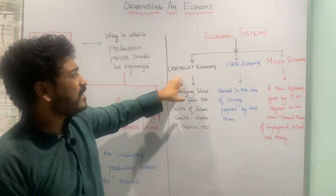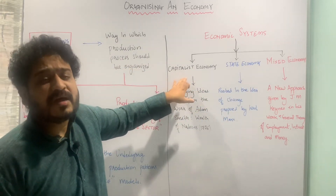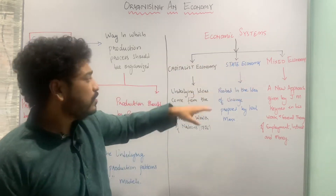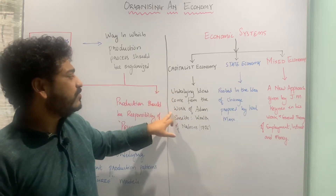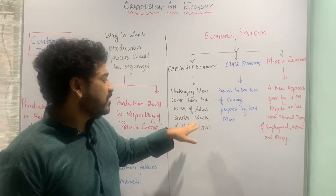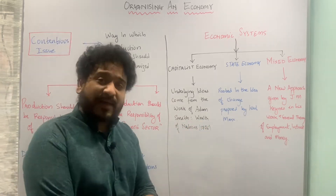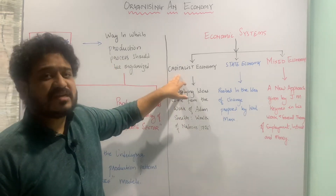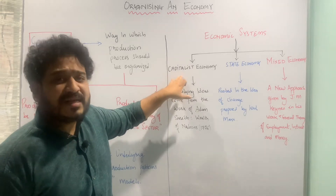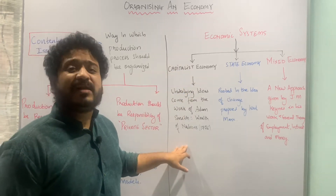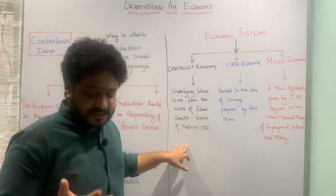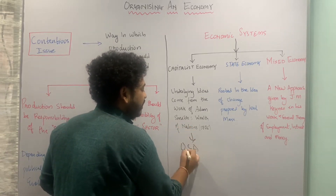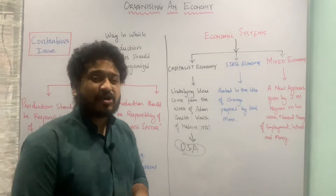The capitalist economic idea evolved from the work of Adam Smith. In his book 'An Enquiry into the Nature and Causes of the Wealth of Nations' (1776), Adam Smith said that the capitalist sort of economy is the best, meaning there should be private individuals running the economy. This sort of economy is witnessed in the United States of America.